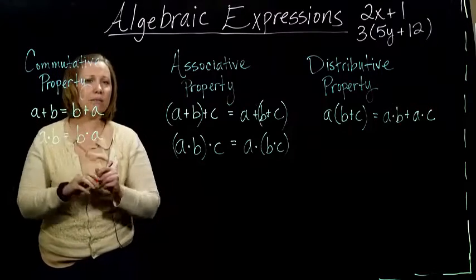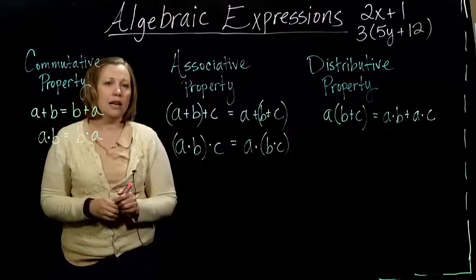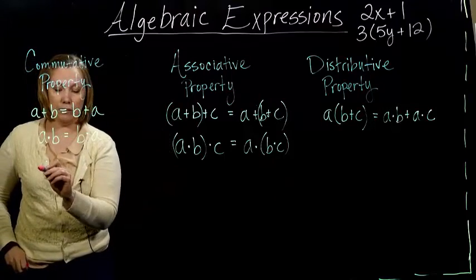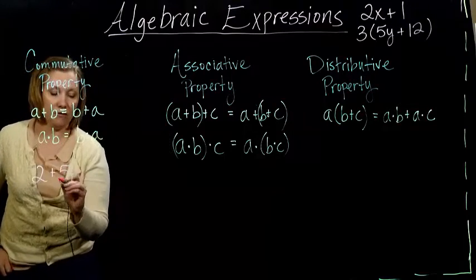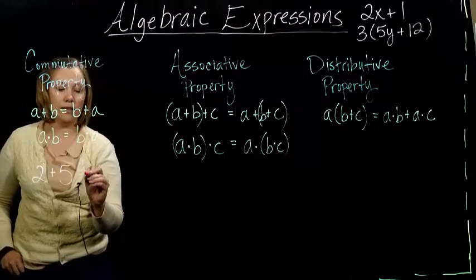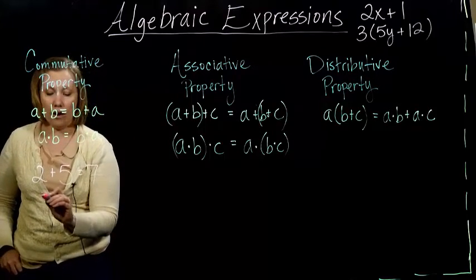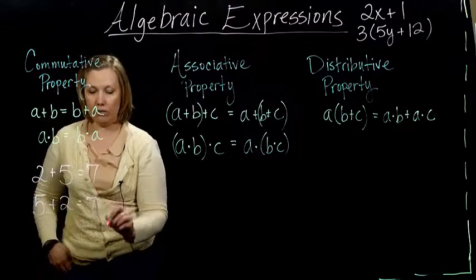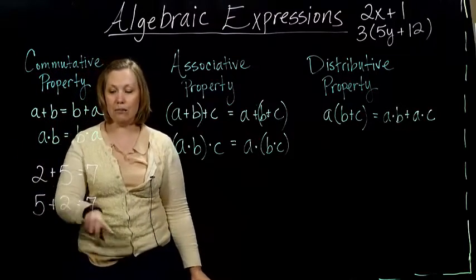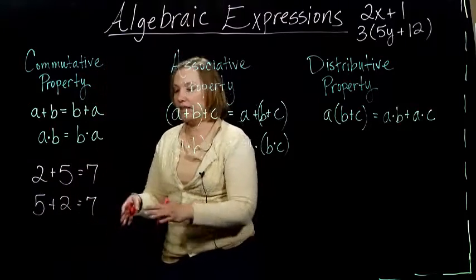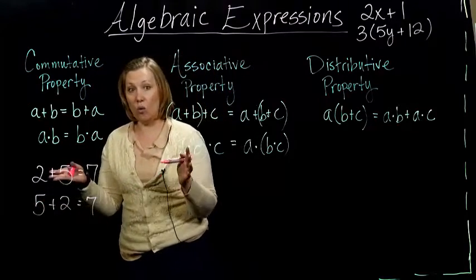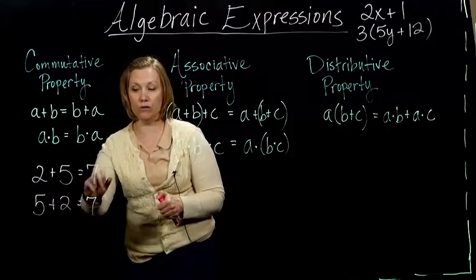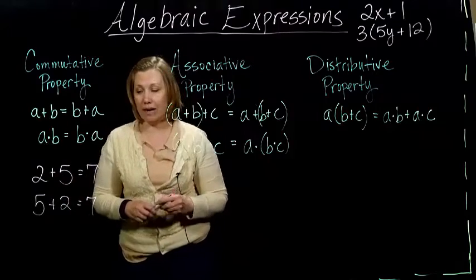And what that commutative property does, it says it doesn't matter if we've got all addition, it doesn't matter what order we add in. So, for example, if we put some numbers in there, if I have 2 plus 5, that equals 7. Or if I put the 5 first and then did the 2, that also equals 7. So 2 plus 5 is the same thing as 5 plus 2. And so what that says is it doesn't matter what order we add in. If we do the 2 first or the 5 first, we get the same answer no matter what.